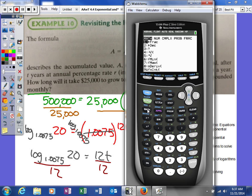All right, so we can use our calculator. We could use the change of base formula, or we can use this right here. So my base is going to be 1.0075, and I'm taking the log of 20. And then I'm going to divide that answer by 12.